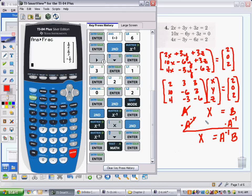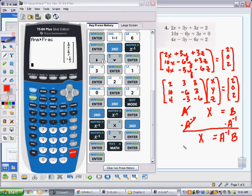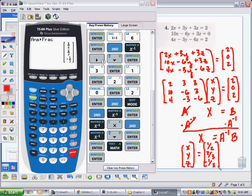So, that tells me my matrix X, which is x, y, and z, is equal to the matrix one-half, two-thirds, and negative one-third. There we go. So, x is one-half, y is two-thirds, and z is negative one-third.